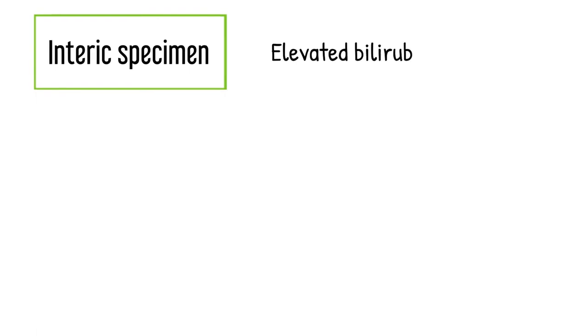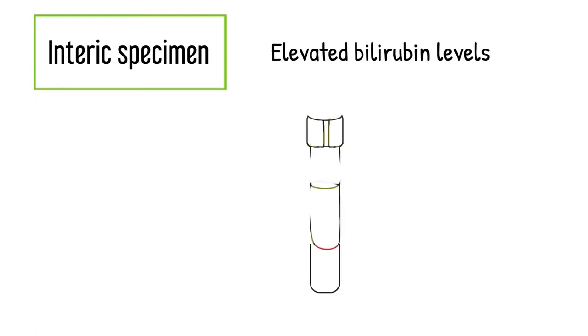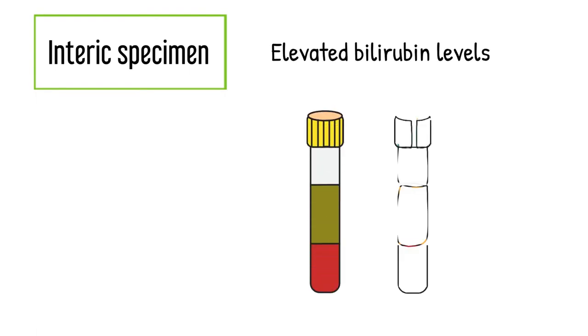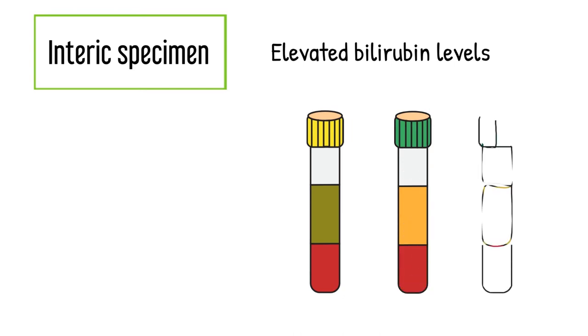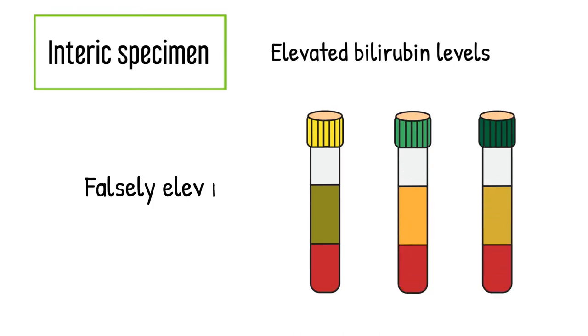Icteric specimen. An icteric specimen contains an elevated bilirubin level. If the specimen is deeply icteric, it could interfere with cholesterol results. The cholesterol result could be falsely elevated due to the icteric specimen.